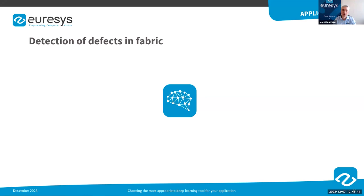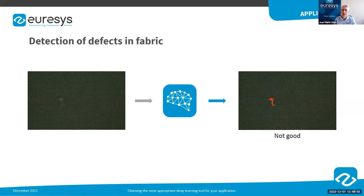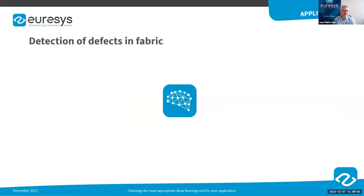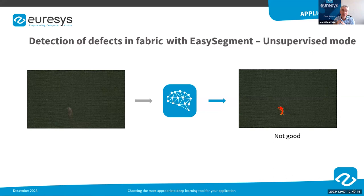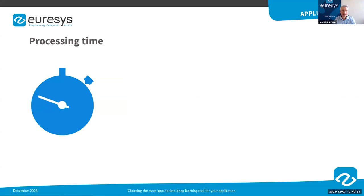Printing and textile industries also benefit from deep learning. In this case, the application needs to detect defective products and return the position and size of each defect. Identification of the defect type is not relevant. Furthermore, in these industries, defects that may appear due to the aging of a machine are usually not predictable. The requirements are: retrieving the location of the defect is mandatory, defects are not predictable, and there is no need to identify them. Because of the ability to train its neural network based on good quality images only, the unsupervised mode of EasySegment is the most appropriate tool.